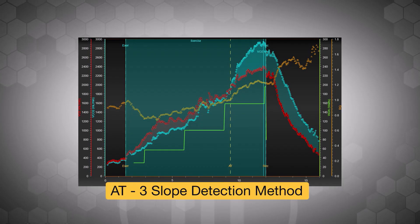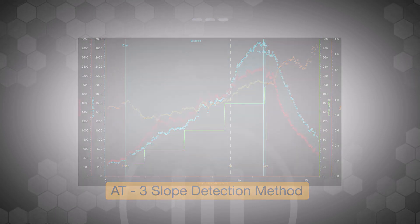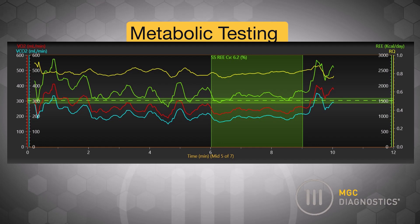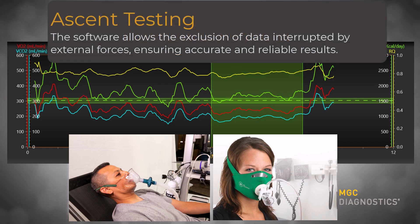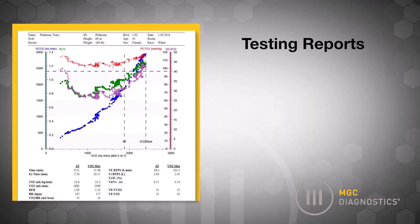Clinicians can easily choose anaerobic threshold using one of three slope detection methods. Metabolic testing with Ascent provides all the features of exercise testing for spontaneously breathing patients. The software allows exclusion of data interrupted by external forces, ensuring accurate and reliable results.